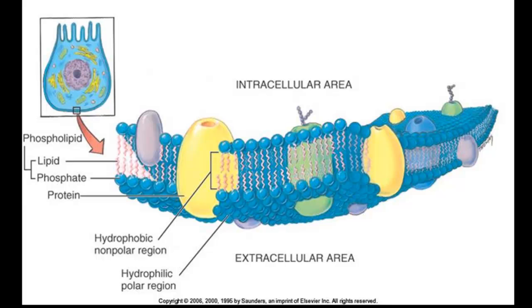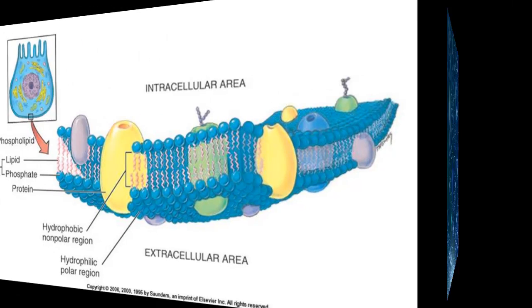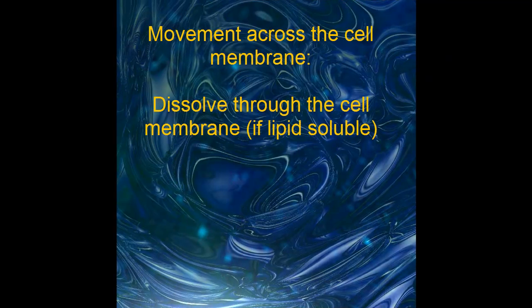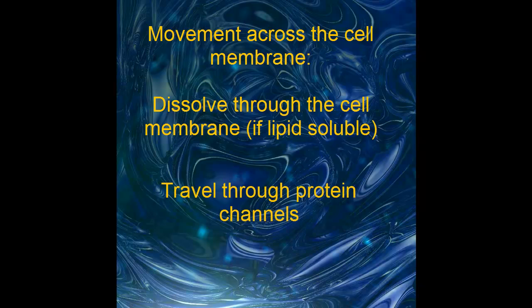There are two ways a substance can move across the cell membrane. It can either dissolve through the phospholipid layer — if it's lipid soluble, it just kind of melts right through that layer. If it's not lipid soluble, it has to go through those protein channels. For example, small molecules like oxygen and carbon dioxide can very easily pass right through the lipid membrane. Other molecules, like sodium and chloride, have to go through the protein channels. And if whatever is going into the cell is bigger than the protein channel, it can't cross the cell membrane at all.